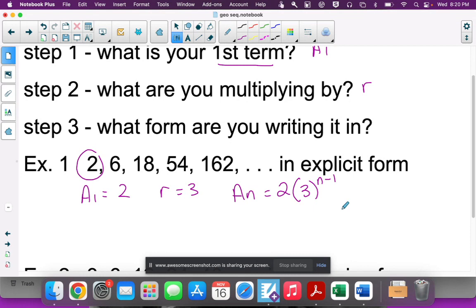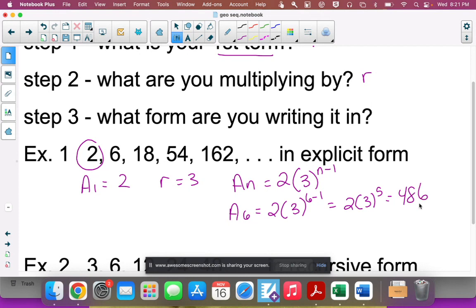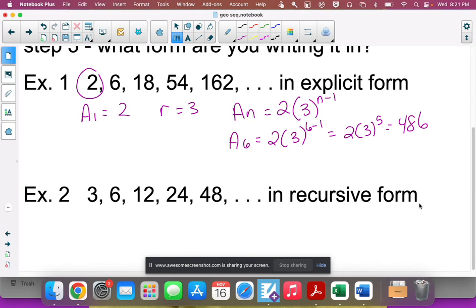If I wanted to find a specific term, let's say A_6, you substitute 6 in for n. So 6 minus 1, and then you put in your calculator 2 times 3 raised to the fifth power. The answer should be 486. Now let's try one in recursive form.